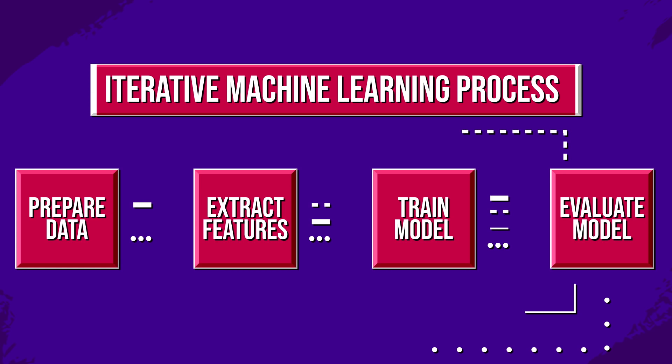We don't really know what feature representation is best for a given task, and in the off chance that someone does, it still relies on a human being in the loop. Ideally, we just want to be able to give a raw data set to a model and have it produce an insight without any human help. Deep learning, though, allows these features to be learned automatically.